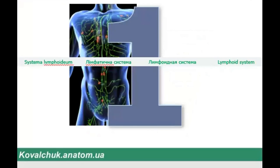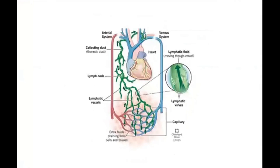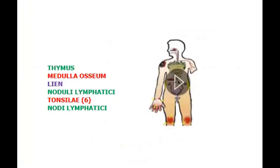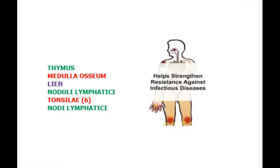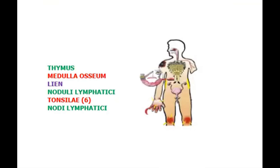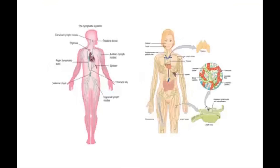Next, it is the lymphoid system — but more correctly, lymphoid organs. Lymphoid organs: in the human body it is the thymus, medulla ossium in the bones, and the lien — the spleen. And noduli lymphatici, tonsillae — I repeat, there are six tonsils in the human body at the level of the pharynx: nasopharynx and oropharynx. And noduli lymphatici — lymph nodes — are capsule structures in different regions, and you will find this information in the future.